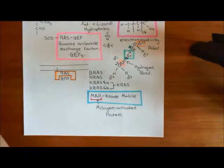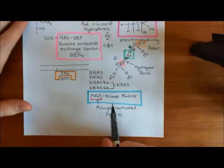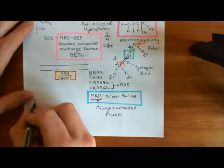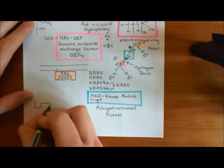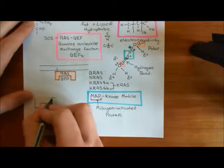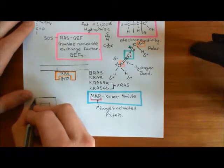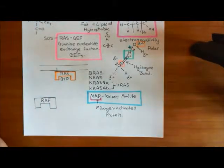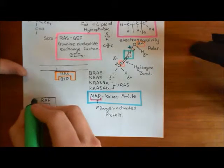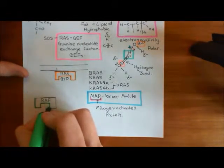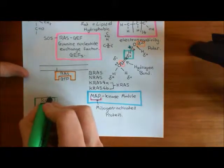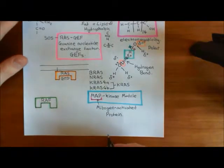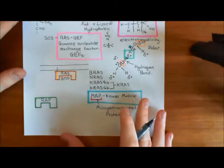The first enzyme in the MAP kinase module is an enzyme known as RAF. We'll colour our RAF enzyme in green. Once activated, it's a serine-threonine kinase, which I'll explain in a moment. There are three different forms of RAF enzymes: ARAF, BRAF, and CRAF — where CRAF is also called RAF1.